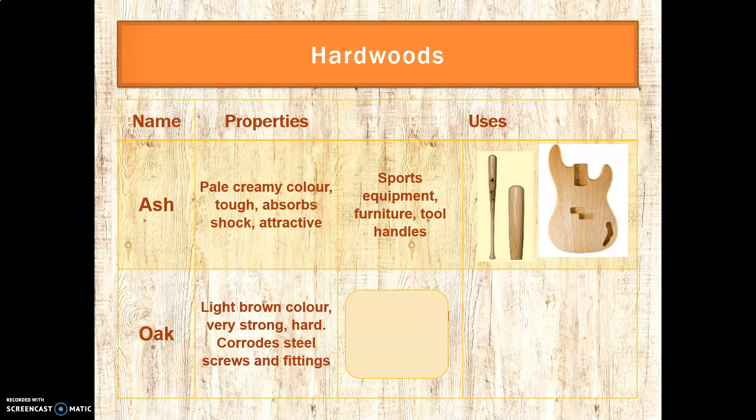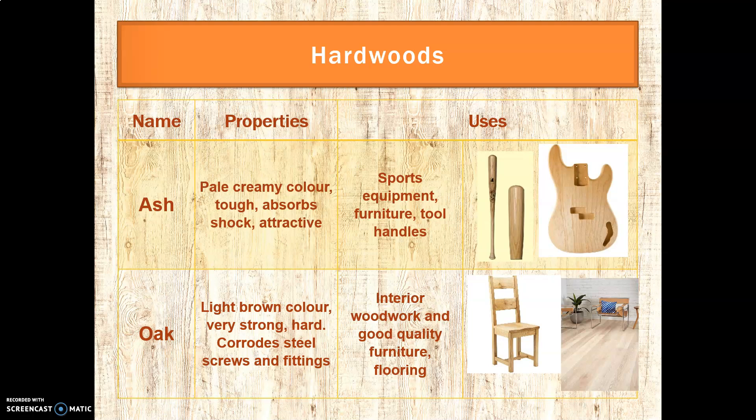Oak, by comparison, is similar but even stronger. It's light brown in colour, very strong and quite hard. However, it does corrode steel screws and fittings, making them more likely to break down — sort of like rusting. So it tends to be used for interior woodwork, really good quality furniture, and flooring.